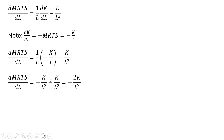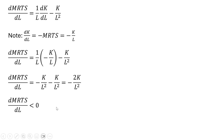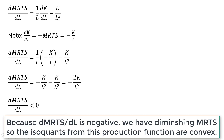Simplifying, we end up with the derivative of the marginal rate of technical substitution with respect to labor equal to minus 2K divided by L squared. Notice that this is negative — that's what we wanted to show. This proves that the MRTS diminishes with an increase in L, so isoquants are convex. Okay, that's it.